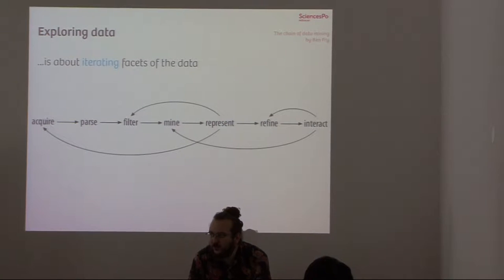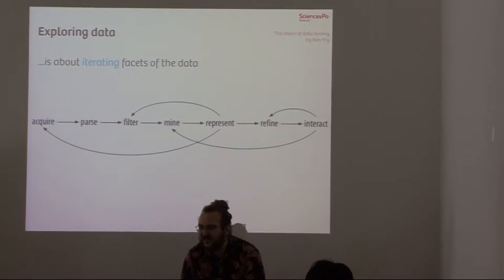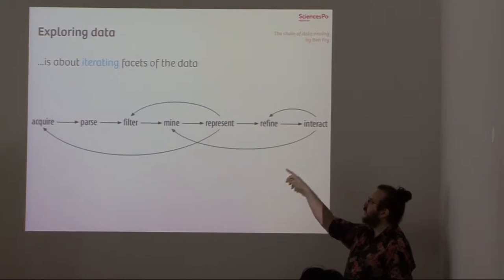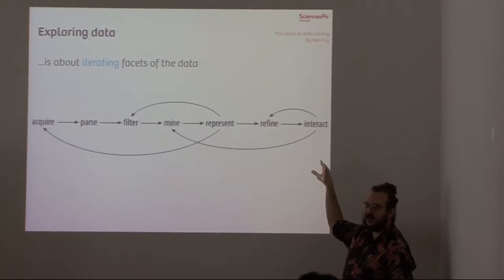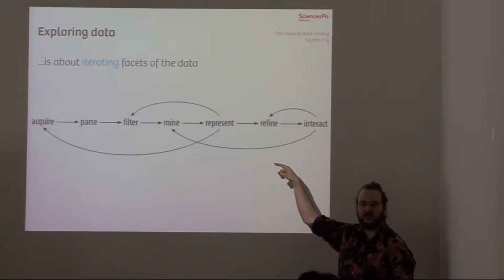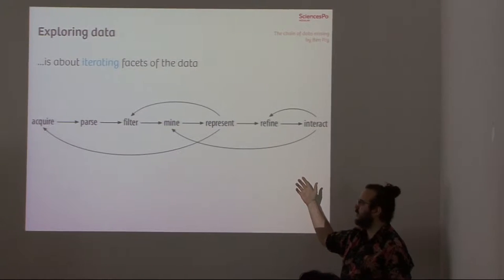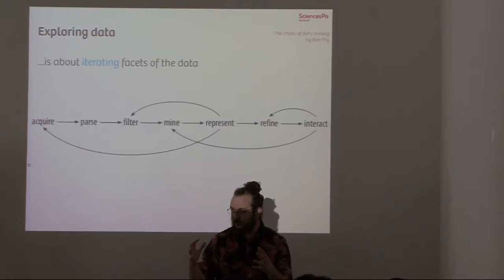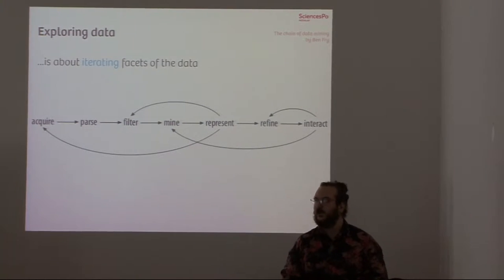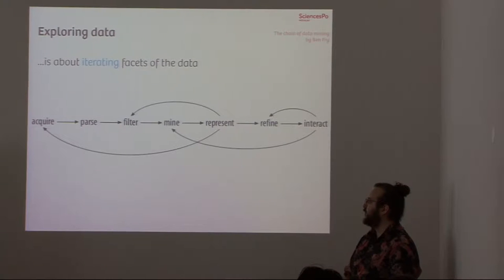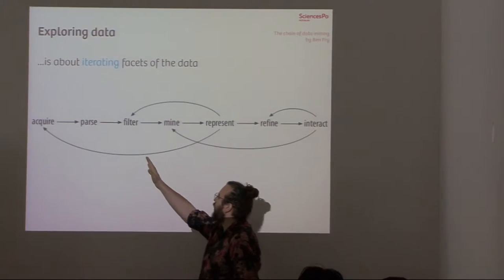You probably know already that very famous image — it's Ben Fry, who invented the Processing language. He explains that the chain from data mining to visualization has different steps, but they don't only go left to right; sometimes you have to go back. It's about iterating facets of the data. In particular, in the middle of this image, you have the filter, mine, represent loop — and then go back to filtering. This central loop is very relevant to us.